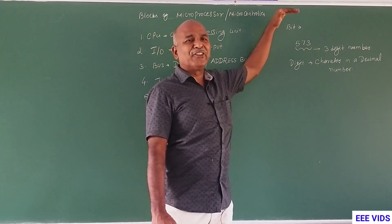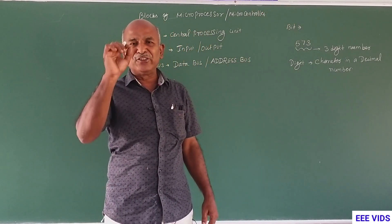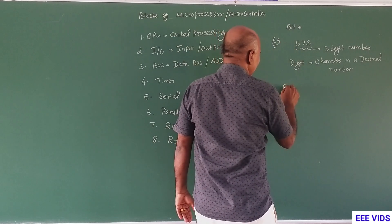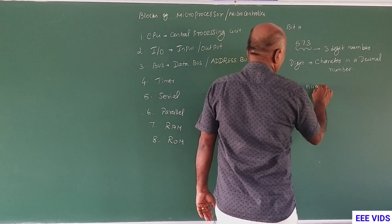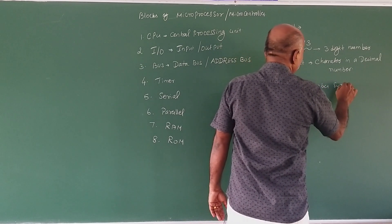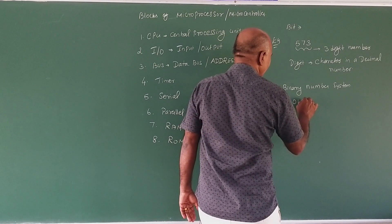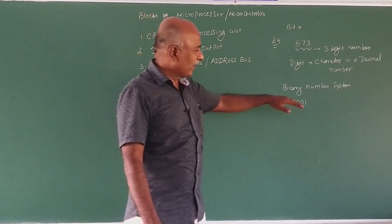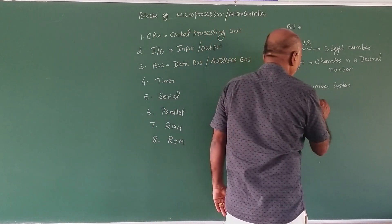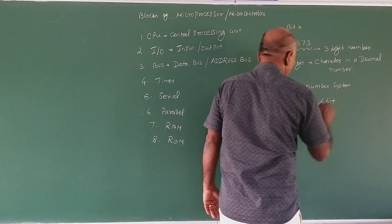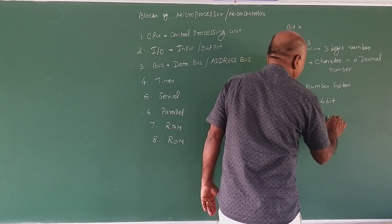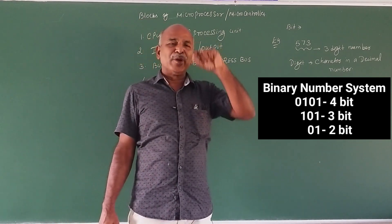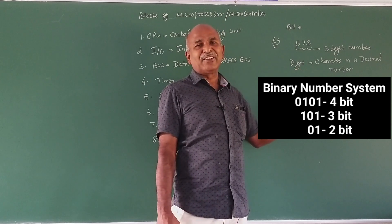That is the binary system. In the binary system, there is only 0 and 1. For example, in the binary number system, we represent numbers using 0 and 1. Here we look at four characters: 0, 1, 0, 1 — it is called a four-bit number. For example, 101 is a three-bit number. 0, 1, 1 is a three-bit number. In binary number system, one character is called a bit.